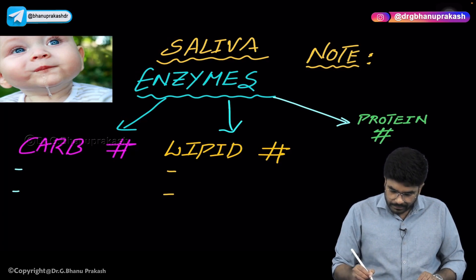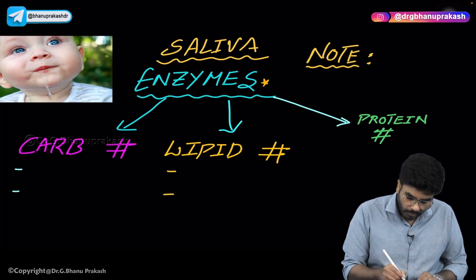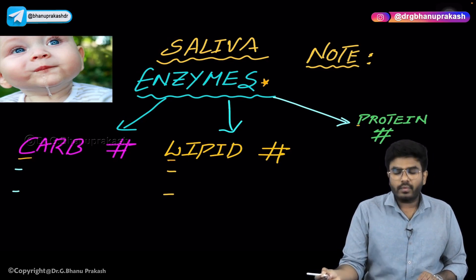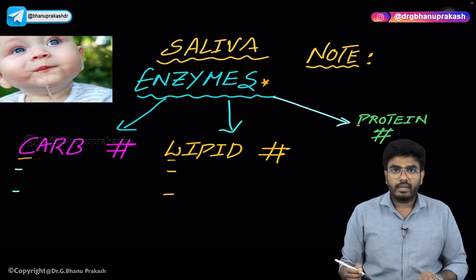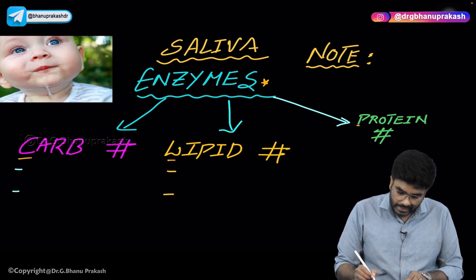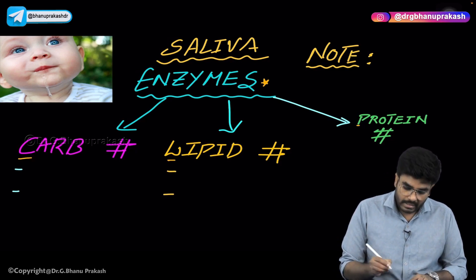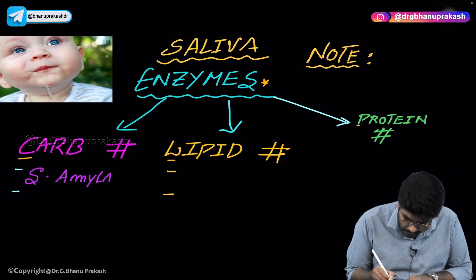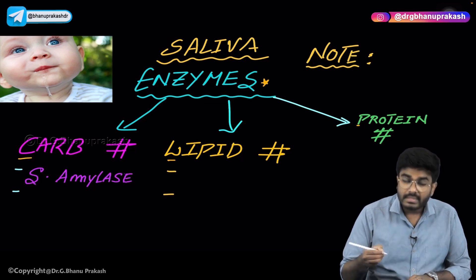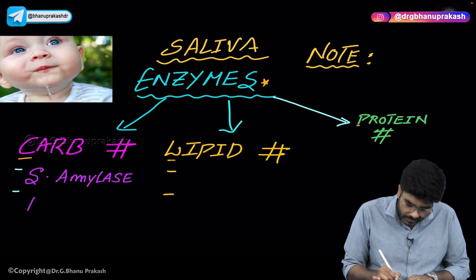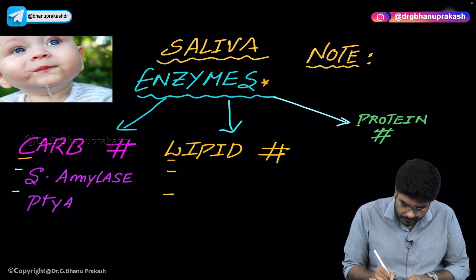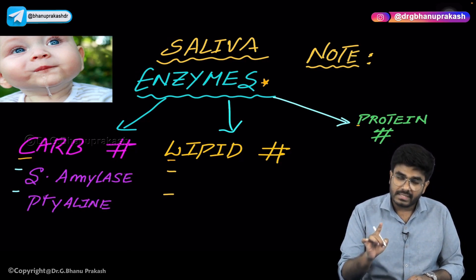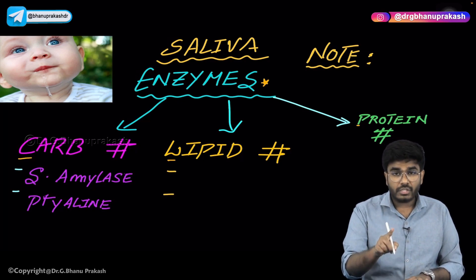In saliva, are there enzymes for carbohydrate digestion, lipid digestion, or protein digestion? For carbohydrate digestion — yes. The enzyme is called salivary amylase, also known as ptyalin. Salivary amylase or ptyalin is an enzyme present in saliva that helps in the digestion of carbohydrates.